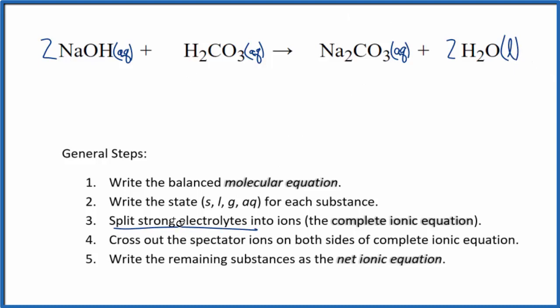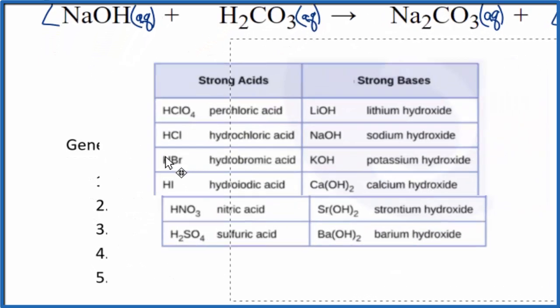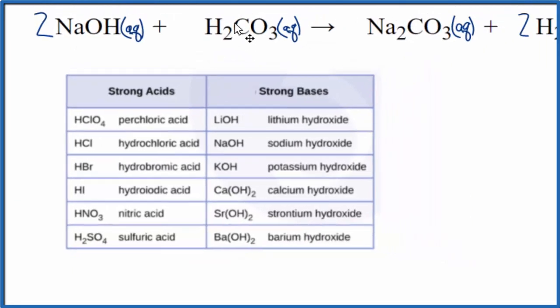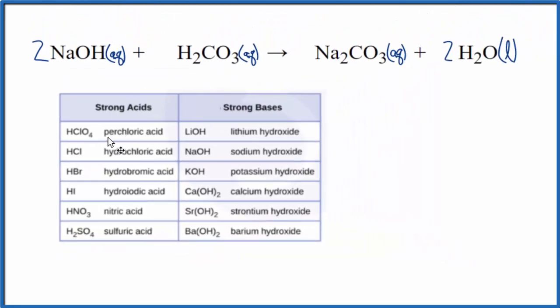Now we can split the strong electrolytes into the ions for the complete ionic equation. We said sodium hydroxide is a strong base. This is a really useful table to memorize for strong acids and strong bases. Here you can see the sodium hydroxide, and for the common strong acids, we don't see carbonic acid on here, so nice to memorize this.